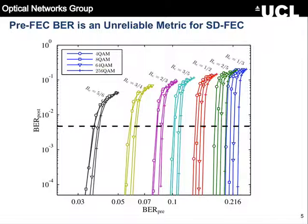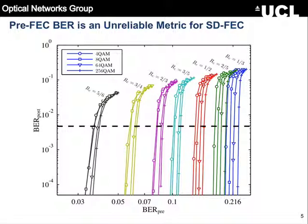In general, look at this code rate — it's the same code simulated using four different modulation formats. This is post-FEC versus pre-FEC. The fact that these curves are spread and not on top of each other basically says that post-FEC BR cannot be predicted based on pre-FEC BR for a soft decision FEC.